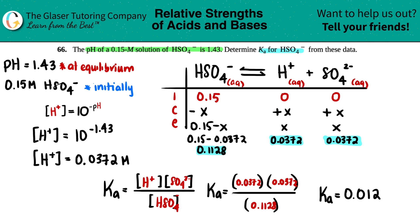I think I did that correctly. Yeah, that looks about right. And that's your answer. No units for Ka value. And there you go. That's it. They just wanted that Ka value, 0.012.